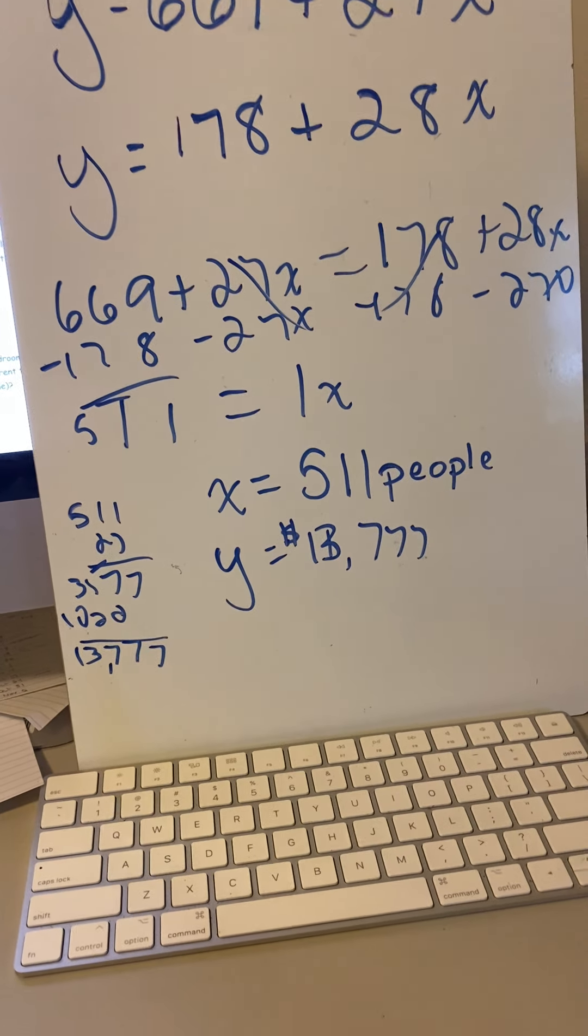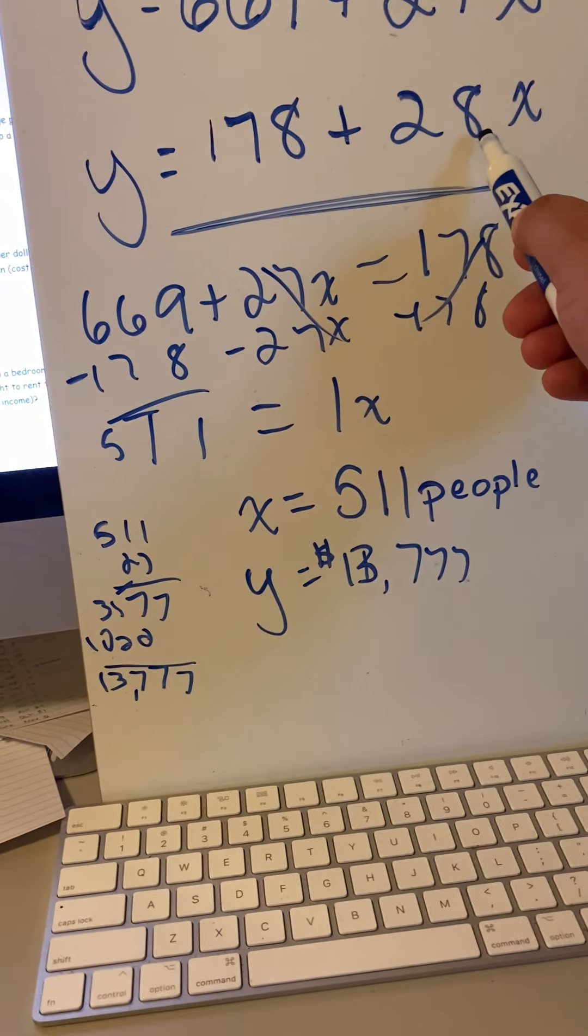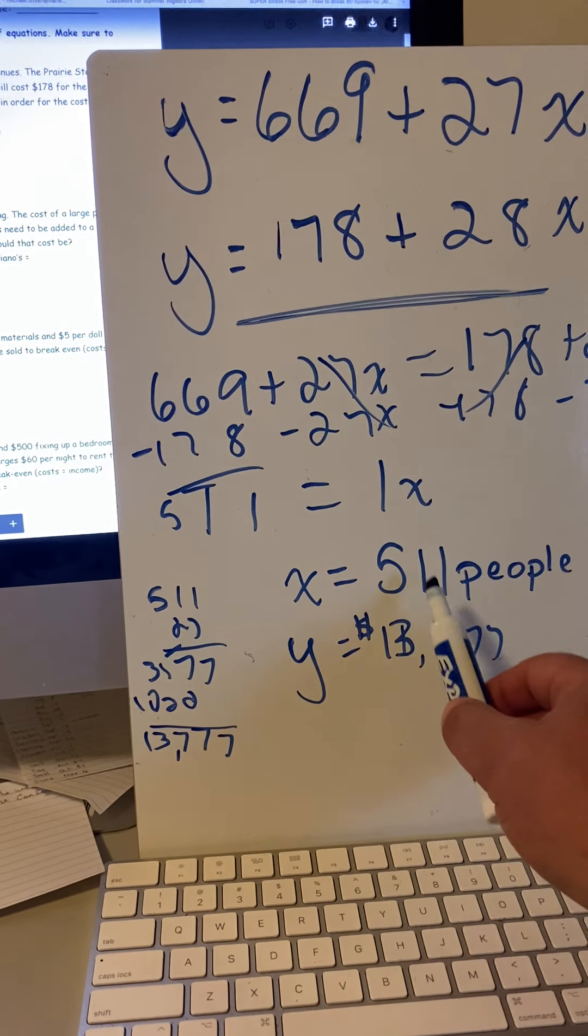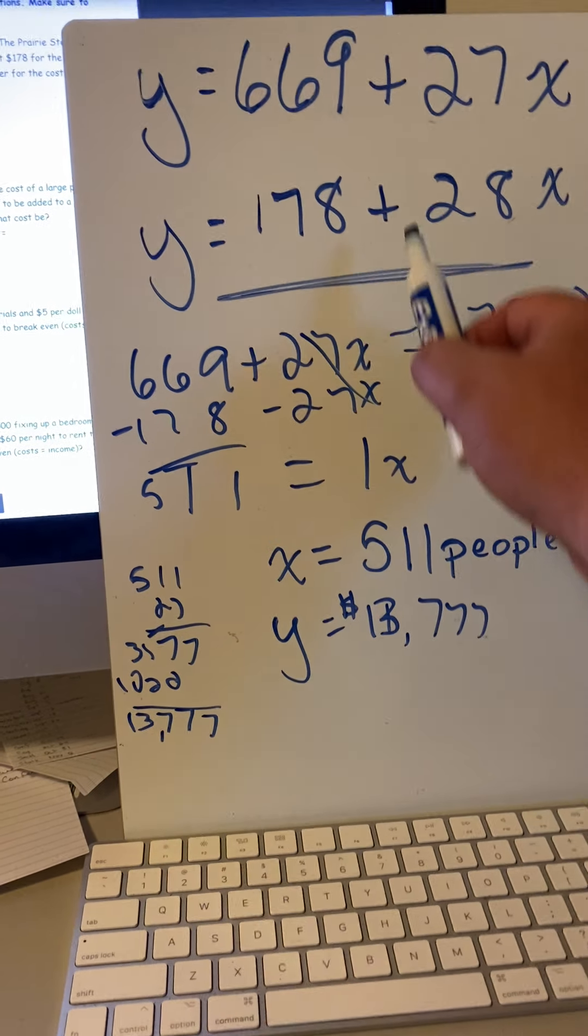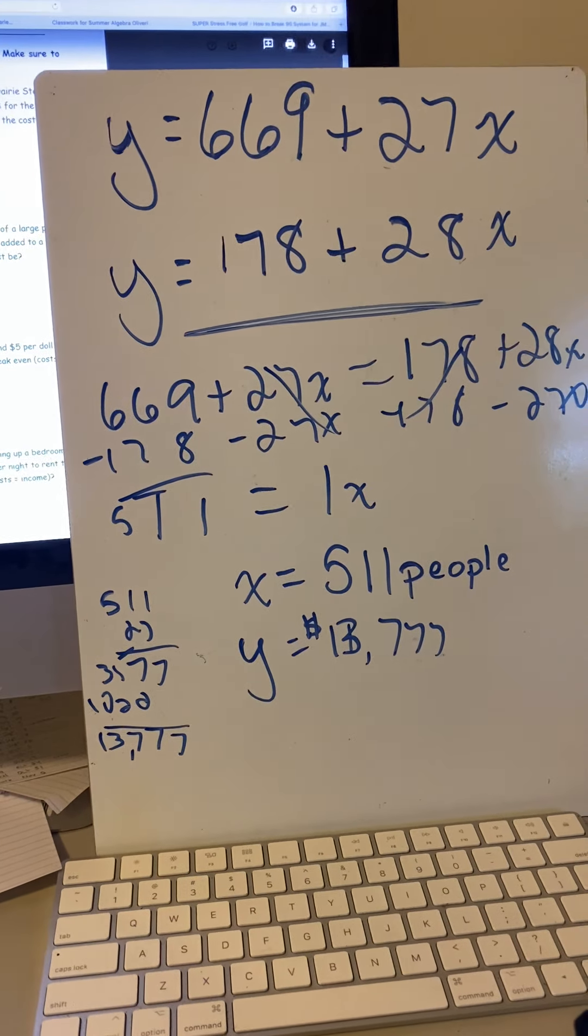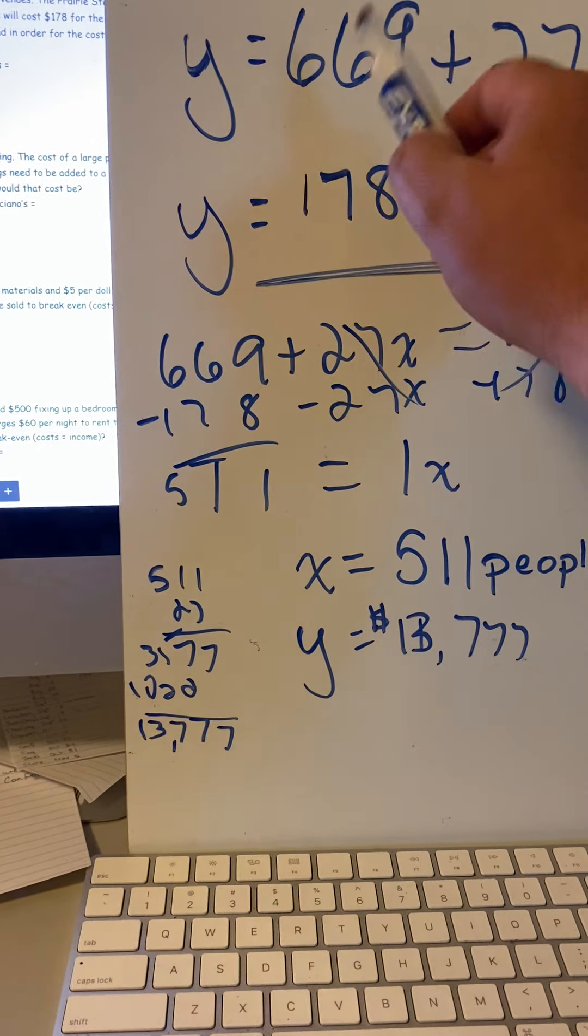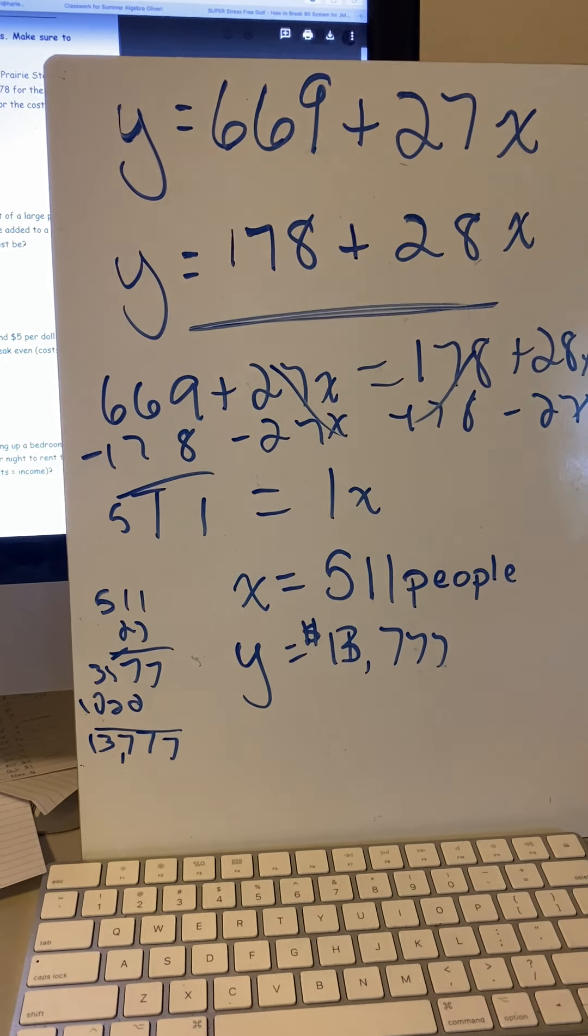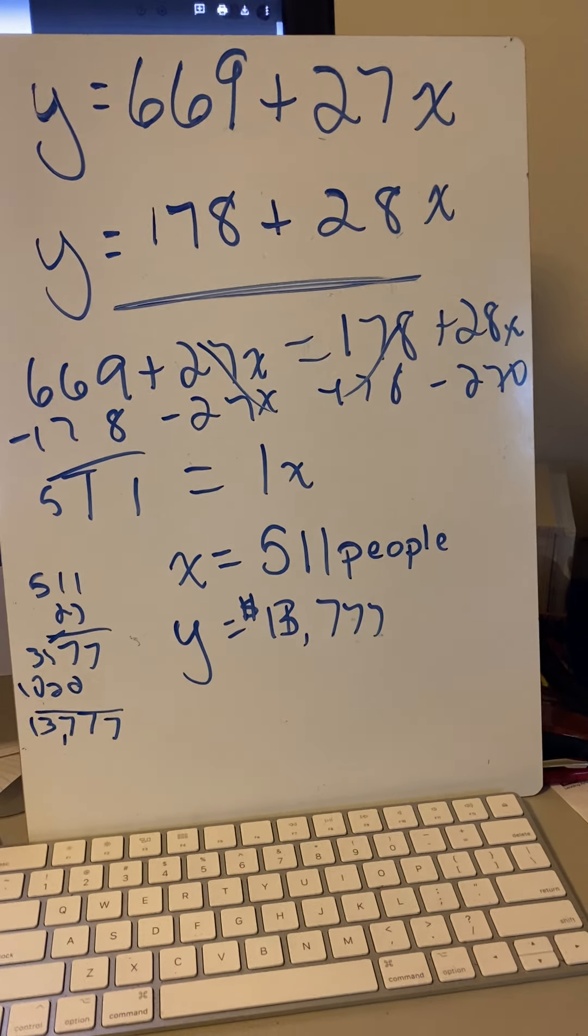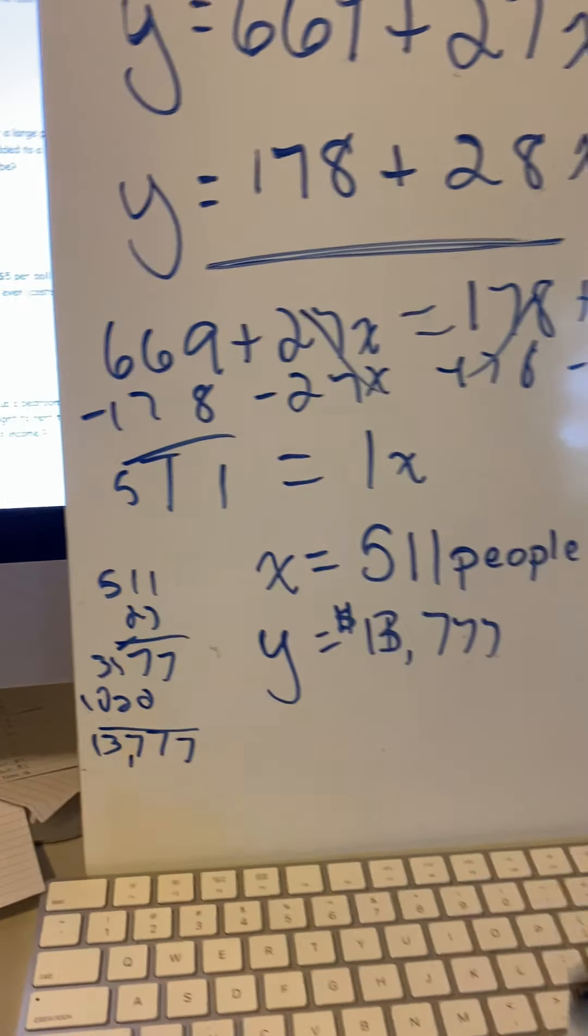Basically, most of you are looking at this saying why wouldn't you just choose Lino's? Lino's is the cheaper of the two. Yes, it's $28 per person but you're only paying $178 for the venue. It's going to take you up to 511 people to invite to make Lino's less cost effective or equal. So you'd have to invite 511 people before Lino's would cost as much or more than Prairie Street. If you're having a party of 511 people, yeah, I guess you'd have to go to Prairie Street, but up until 511 Lino's is your best bet.